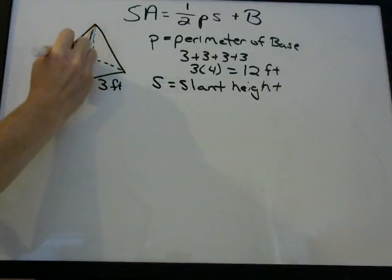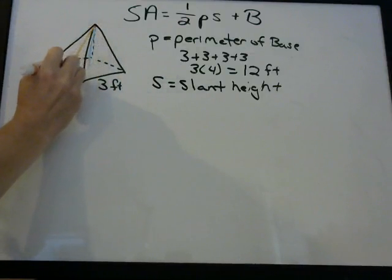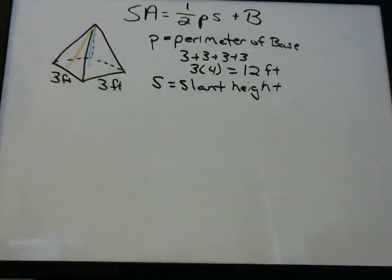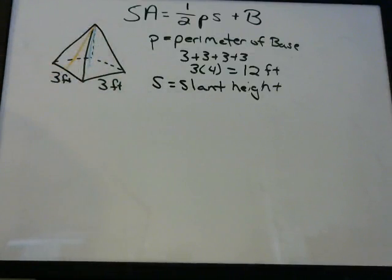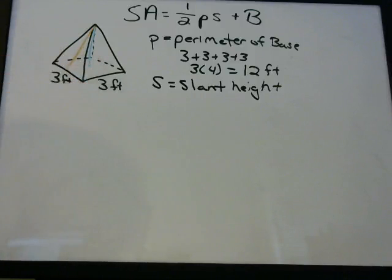It's like it's coming down the face of that triangle to the middle of the base edge — that is the slant height. That's the number we want. These are going to be different numbers.